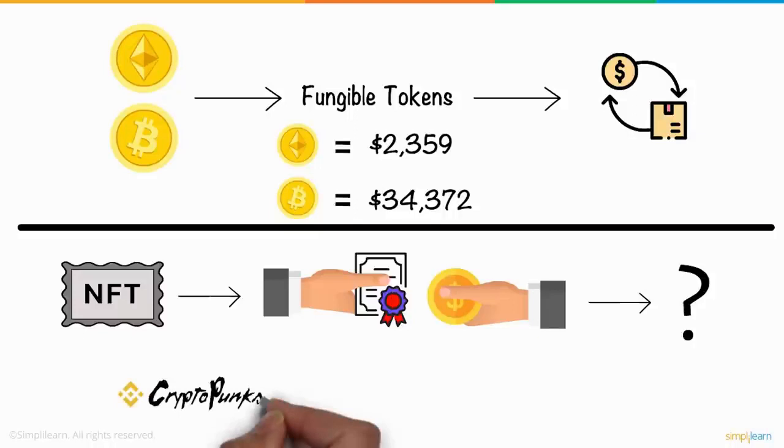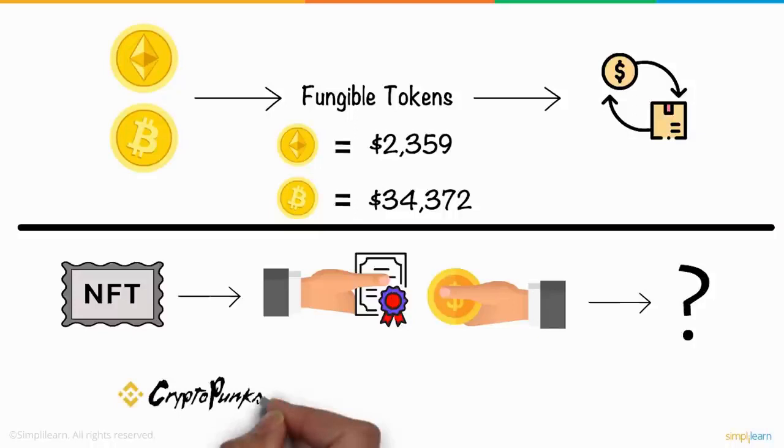CryptoPunks is a remarkable example of NFT. It enables you to buy, sell, and store 10,000 collectibles with the proof of ownership being stored on the Ethereum blockchain.